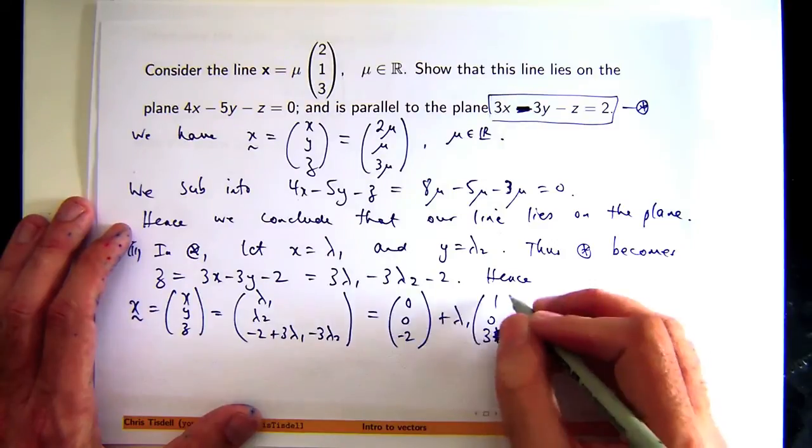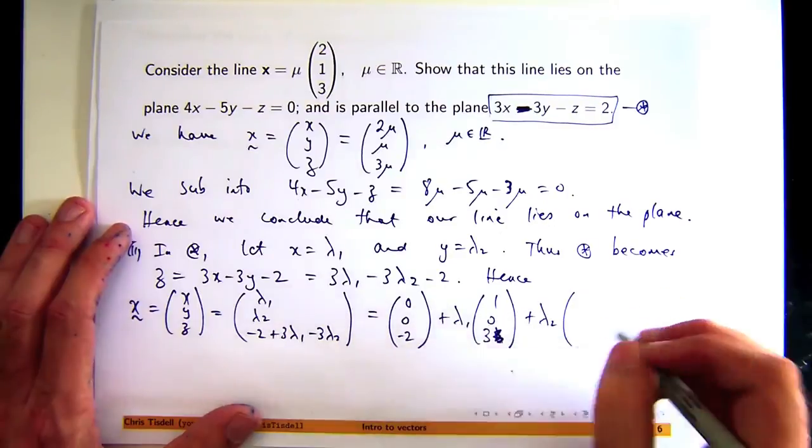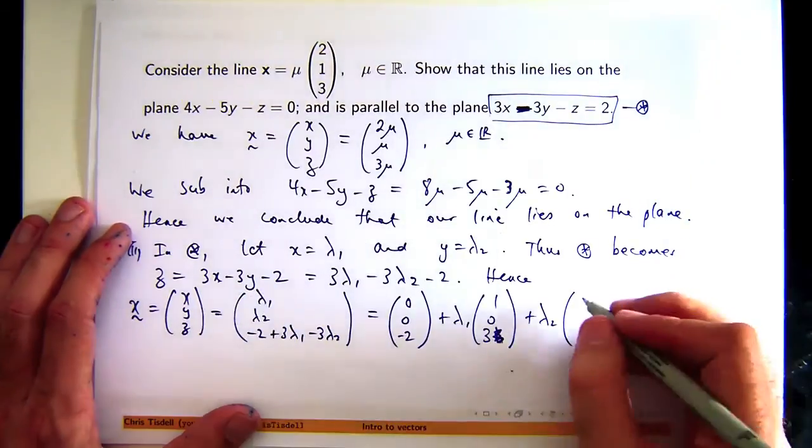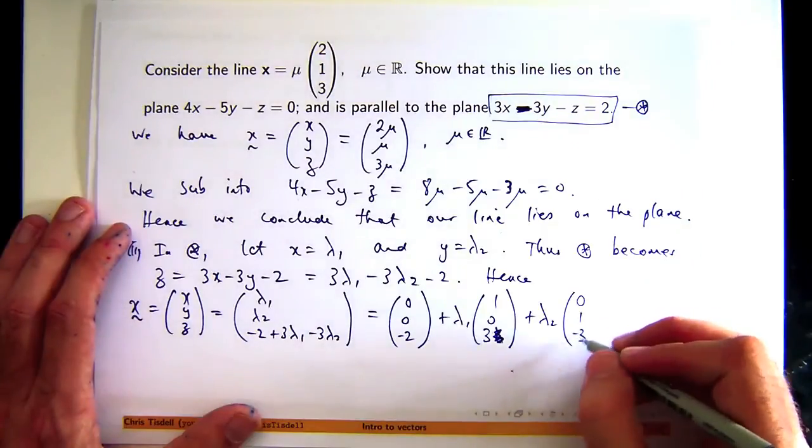So just using scalar multiplication in reverse, I can come up with that. And let's look for the lambda 2s. There's no lambda 2s up there, one lambda 2 there, and negative three lambda 2s down there.